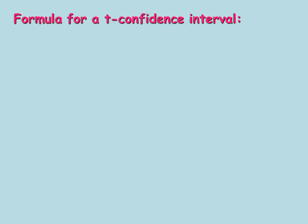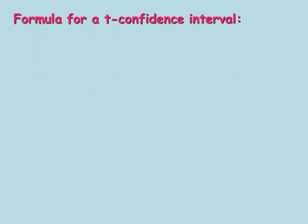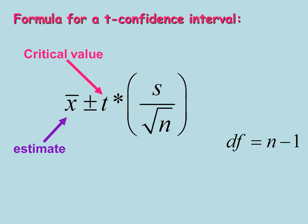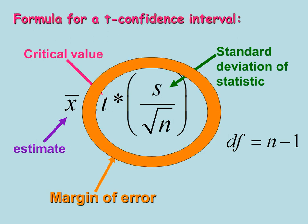Now let's take a look at a t confidence interval — hopefully you'll see the similarities and differences. Not much difference: here's our estimate, our critical value, our standard deviation. However, notice that s here is a sample standard deviation — that's something we're going to have to calculate, and sometimes it's given depending on our data. Our t-value is something else we'll have to calculate, and DF here is the degrees of freedom, which we'll discuss further. There's our margin of error, which is our critical value times the standard deviation — somewhat similar, but there definitely are some differences.